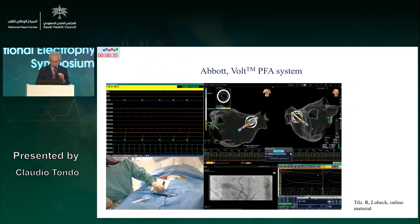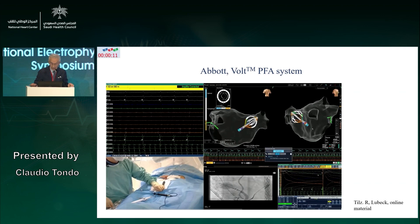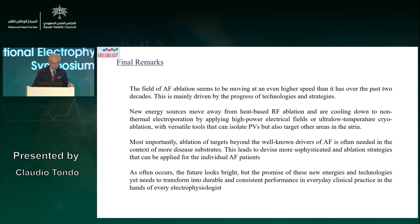We'll see whether this catheter can also be used for the posterior wall. Finally, the Abbott PFA system is a basket-type catheter used for PVI, and I think it could also be a good catheter for isolated posterior wall ablation. This is likely to be available next year.